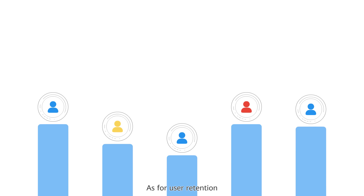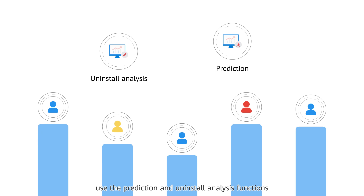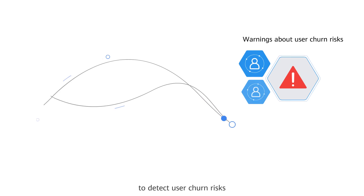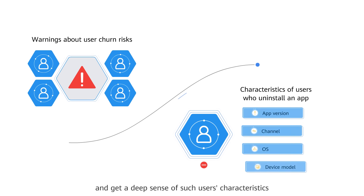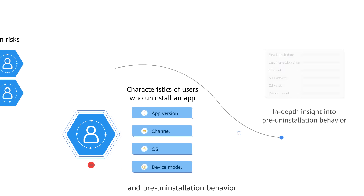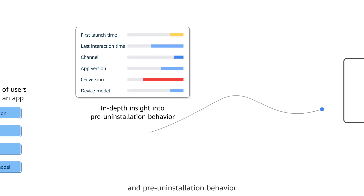As for user retention, use the prediction and uninstall analysis functions to detect user churn risks and get a deep sense of such users' characteristics and pre-uninstallation behavior.